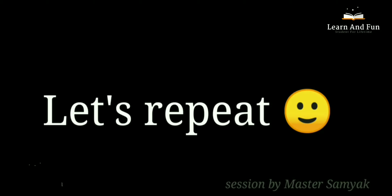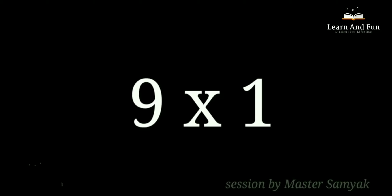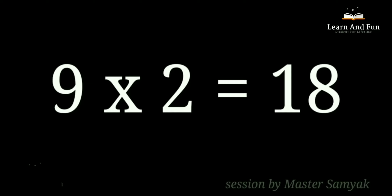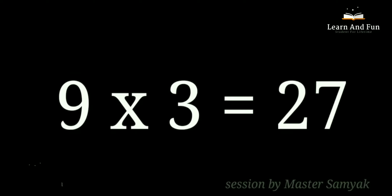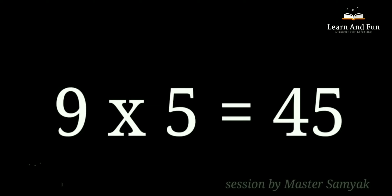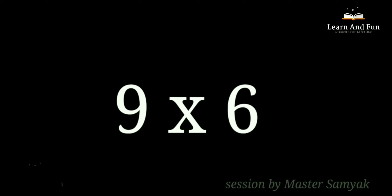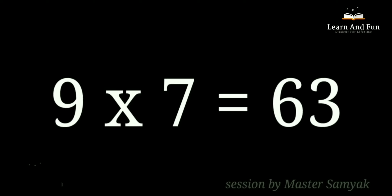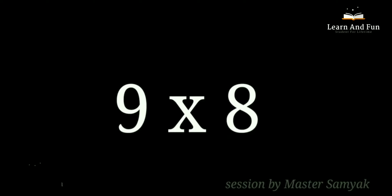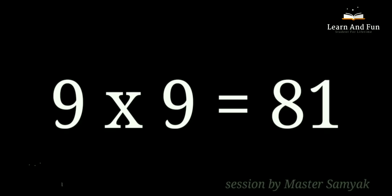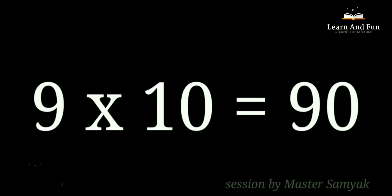Let's repeat. 9 ones are 9. 9 twos are 18. 9 threes are 27. 9 fours are 36. 9 fives are 45. 9 sixes are 54. 9 sevens are 63. 9 eights are 72. 9 nines are 81. 9 tens are 90.